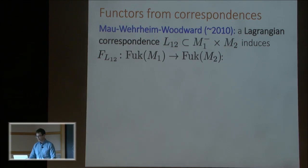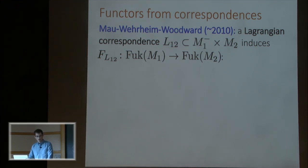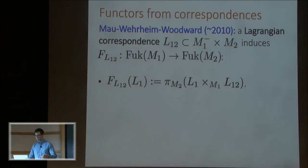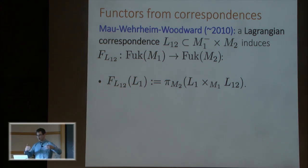Almost ten years ago, Wehrheim and Woodward showed that the Fukaya category does obey a sort of naturality. They showed that a Lagrangian in a product — a Lagrangian correspondence — gives rise to a functor between Fukaya categories. On the object level it's straightforward: you pretend the correspondence L12 is the graph of a symplectic embedding, and to push forward a Lagrangian in M1, you take the fiber product over M1 of L1 and L12, then push forward with the projection to M2, generically getting a Lagrangian in M2.